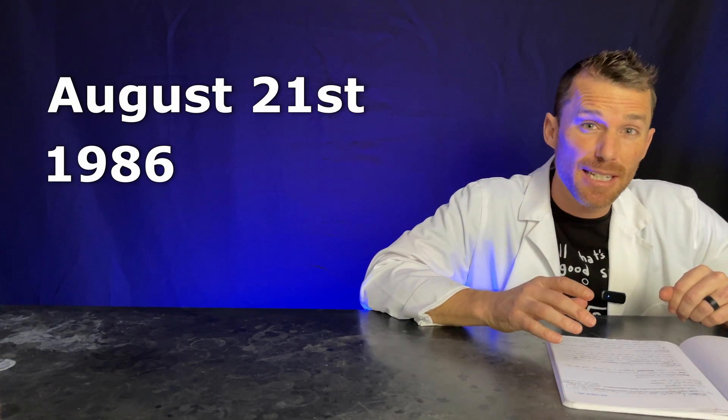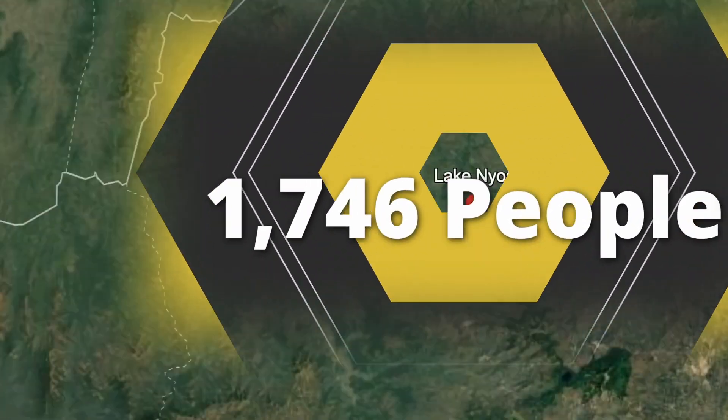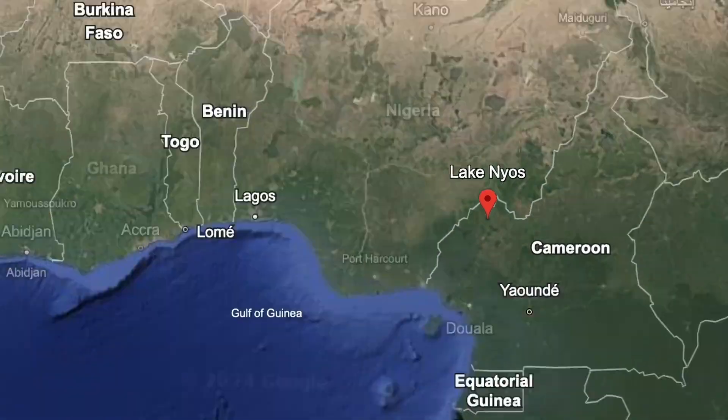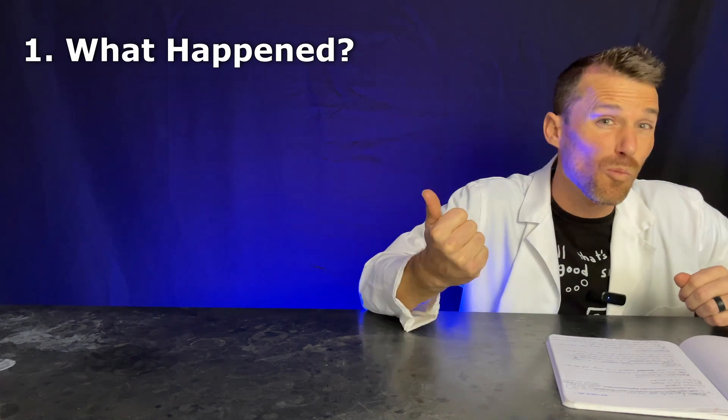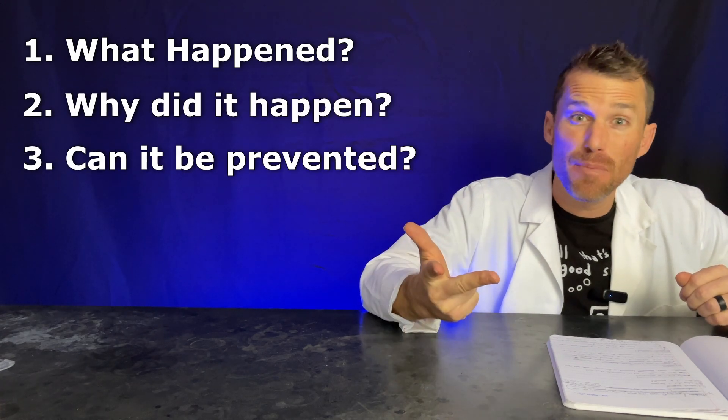On August 21st, 1986, 1,746 people in Lake Nyos, Cameroon were found dead. Something terrifying happened I didn't even think was possible. So what happened, why did it happen, and can it be prevented?